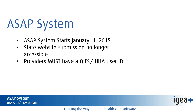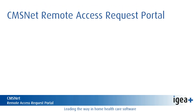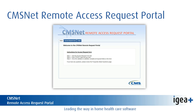To access the OASIS ASAP system, providers will need the KEYS HHA User ID. If you currently have a KEYS HHA User ID, no action is required. This User ID will allow access to both the OASIS ASAP Submission System and CASPER Reporting System. If you do not have a KEYS HHA User ID, refer to the CMS Net online registration application. We will list the links on our website along with other relevant and important links.